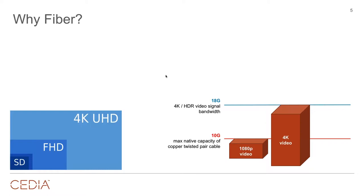4K displays require up to 18 gig in bandwidth. A Cat 5 or Cat 6 cable that does 10 gig — we've got a problem. The bandwidth required for signals we use today already exceeds the max bandwidth of cables we've been pulling for years. You can use extenders that compress an 18-gig 4K HDR signal down to 9 or 8 gig and effectively transmit it. It works, but it's not fully native and uncompressed — there are artifacts and processing issues.